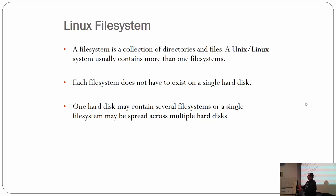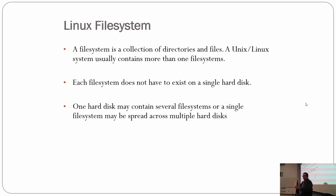So it's a collection of files and folders. And most Unix file systems or operating systems have more than one file system connected to it at a time. They don't have to exist all on one disk — they can exist on multiple disks, or you can have a single disk with all your file systems, or spread across multiple disks, or a combination thereof.